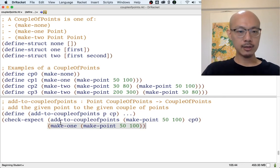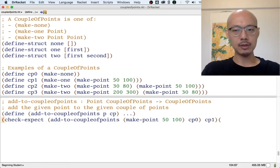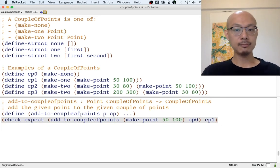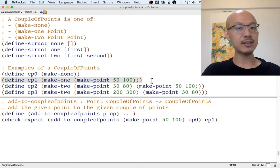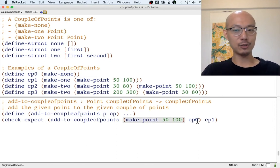Now, it turns out that this expected output is the same as CP1, so I'm just going to type CP1. But you don't have to, you can just type out the definition of CP1. Okay, so that's our first example. Basically, if you compare CP0 to CP1, the difference is the new point, makePoint50100, has been added. So the result of adding to CP0 should be CP1.